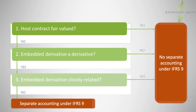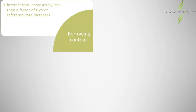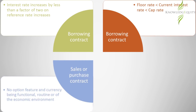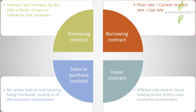The standards refer to characteristics of embedded derivatives that exempt them from being separated. Firstly, for a borrowing contract where the contract interest rate increases by less than a factor of two each time the reference interest rate increases. Secondly, for a borrowing contract where the current interest rate sits above a floor rate and/or below a cap rate. Thirdly, for a sales or purchase contract where payment is made in the functional currency of a contract party, or in the currency that the goods are routinely bought and sold such as the US dollar, or in a currency that matches the economic environment of the transaction such as USD for a trade in China. Lastly, for a lease contract where there is an inflation adjustment clause that relates to the entity's own economic environment.